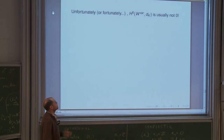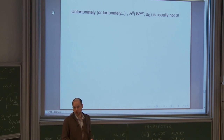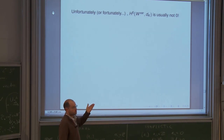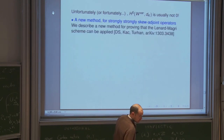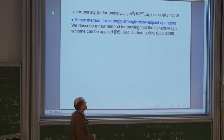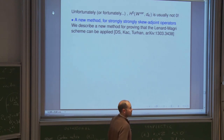Unfortunately the cohomology is usually not zero. However, knowing the explicit expression for the cohomology — which we computed in many examples — allows one to still derive that the Lenard scheme can be applied. In another paper just posted to the arXiv, we introduce a new method explaining how to apply the Lenard scheme when the cohomology is non-zero, based on the assumption that the Poisson structure K is strongly skewadjoint.